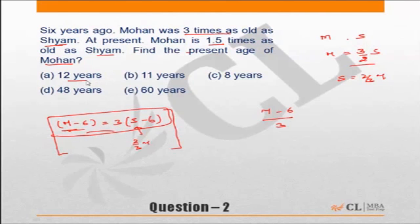So check the choices. Twelve minus six is a multiple of three. Eleven minus six is not a multiple of three, incorrect. Eight minus six is not a multiple of three, incorrect. Forty-eight minus six is a multiple of three. Sixty minus six is a multiple of three. So you have eliminated two out of the five choices.